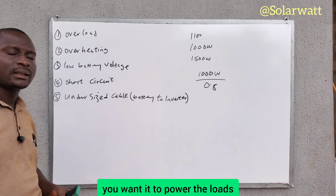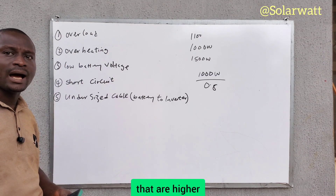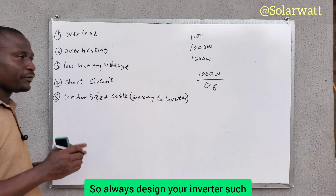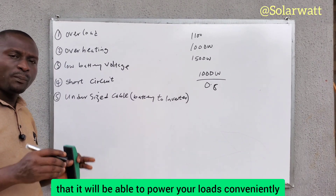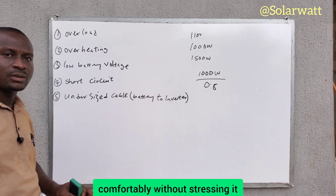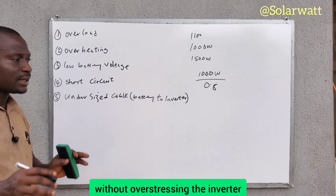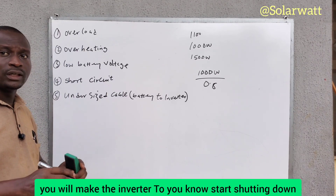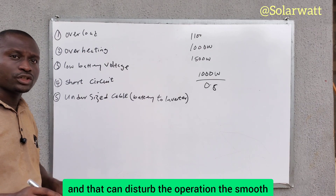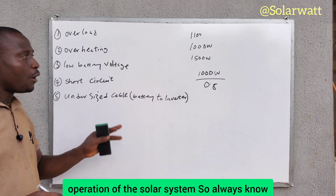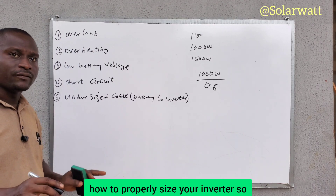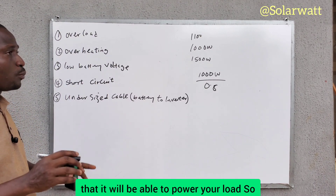You want it to power loads that are higher than its rated capacity. So always design your inverter such that it will be able to power your loads conveniently and comfortably, without overstressing it — because if you do that, the inverter will start shutting down and that can disturb the smooth operation of the solar system. Always know how to properly size your inverter so that it will be able to power your load.